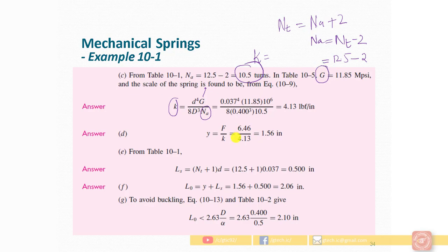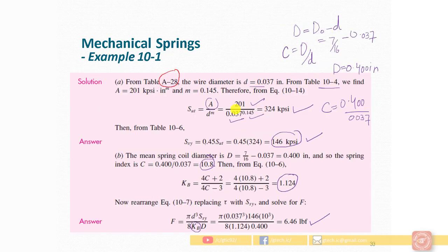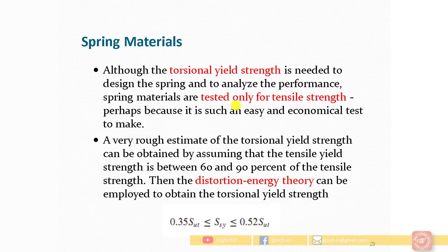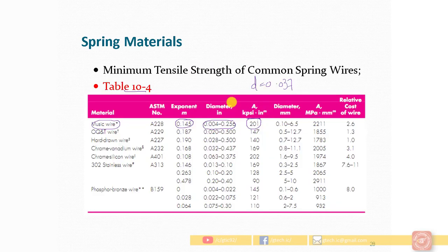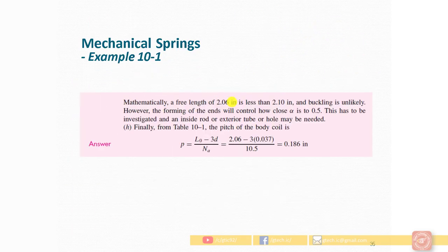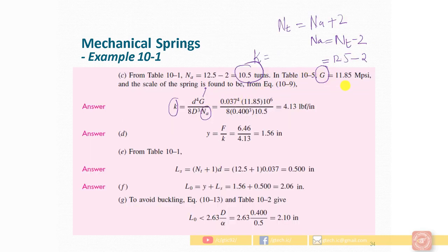Next we find the modulus of rigidity G from table 10/5. The value of G = 11.85 × 10⁶ psi. Substituting all values into the spring scale formula gives k = 4.13 lb/in (force per unit deflection). Using the calculated force and spring scale, the deflection comes out to 1.56 inches.